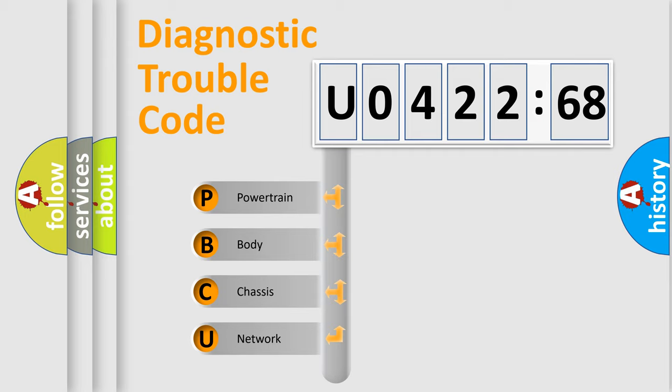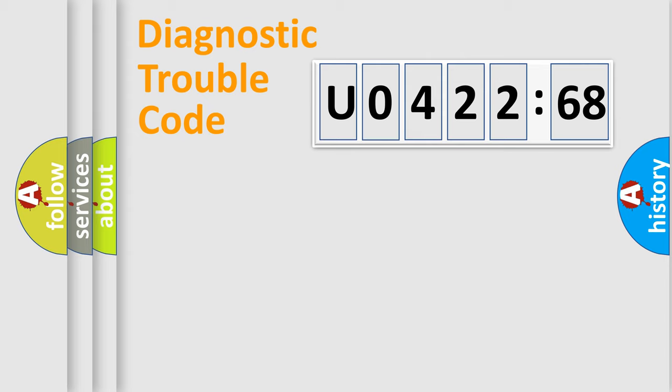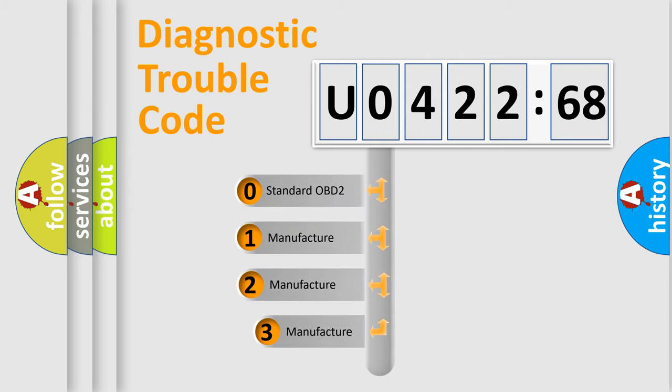We divide the electric system of automobile into four basic units: Powertrain, Body, Chassis, and Network. This distribution is defined in the first character code.